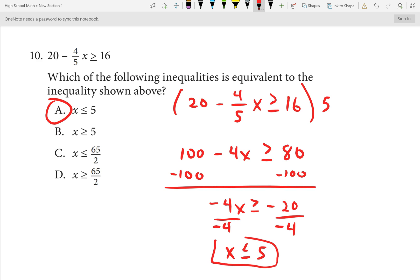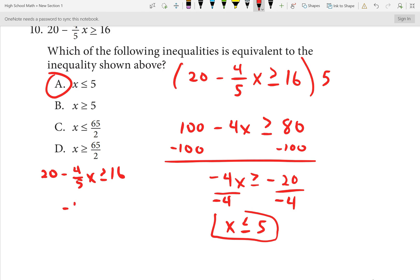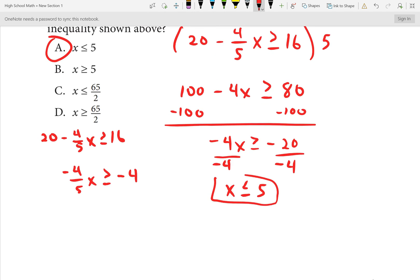I will show the direct solving on this one as well. So we have 20 minus 4 fifths X is greater than or equal to 16. Subtracting 20 on both sides yields negative 4 fifths X is greater than or equal to negative 4. Now we could divide by this 4 fifths on both sides. But equivalently it's multiplying by the reciprocal. Multiplying by negative 5 over 4. So the 4 cancels with the 4 to leave negative 5 times negative 1 essentially is 5. And these two will cancel each other. We should change the direction of the inequality because when you multiply or divide by negative. X less than or equal to 5.